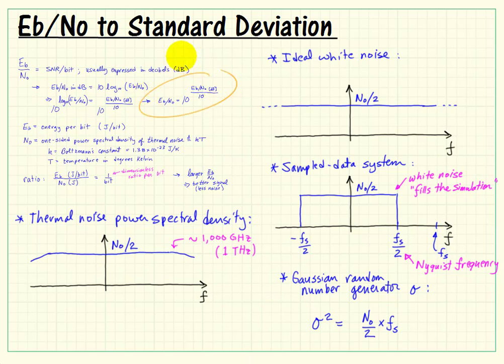Now, these pair of equations can ultimately be solved by beginning with ebno and db, finding n sub 0 from that expression, plugging n sub 0 in right here, solving for the variance, and then taking the square root of that to get the standard deviation that you need.